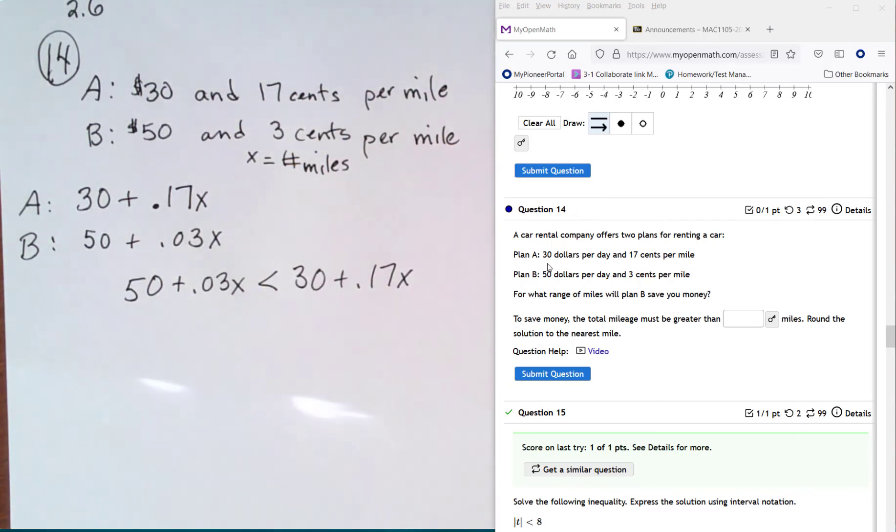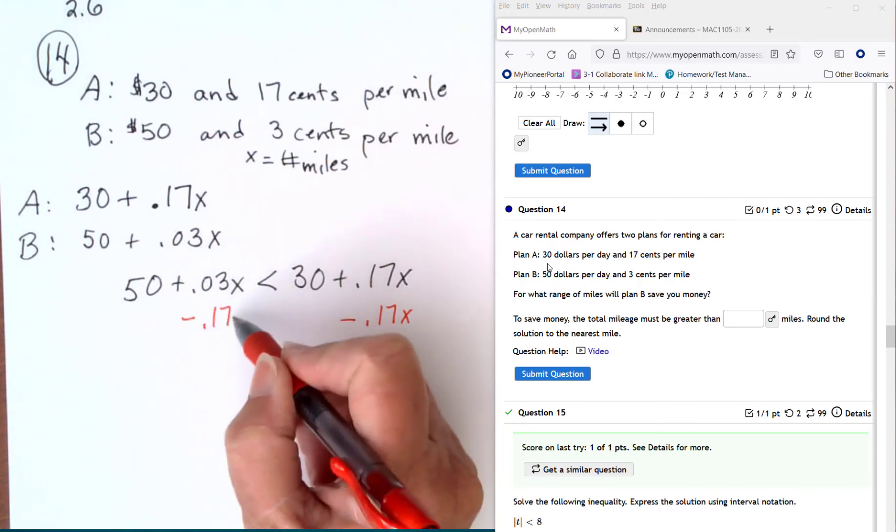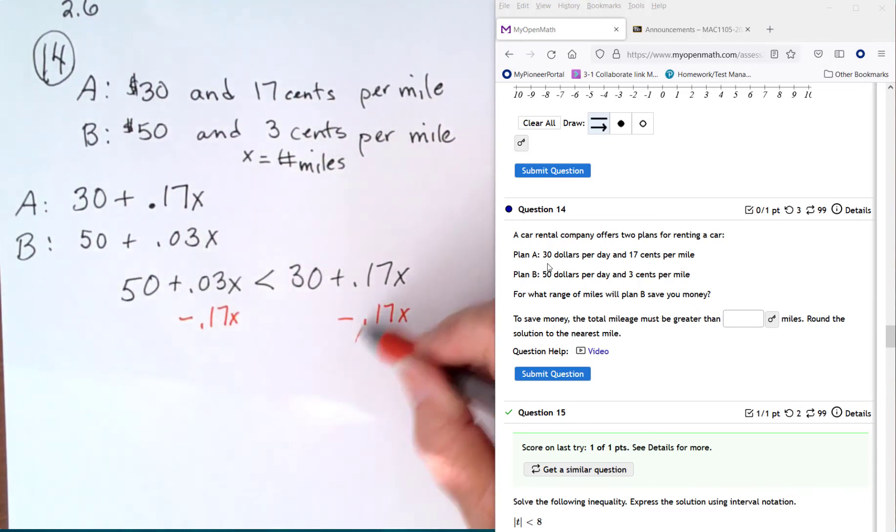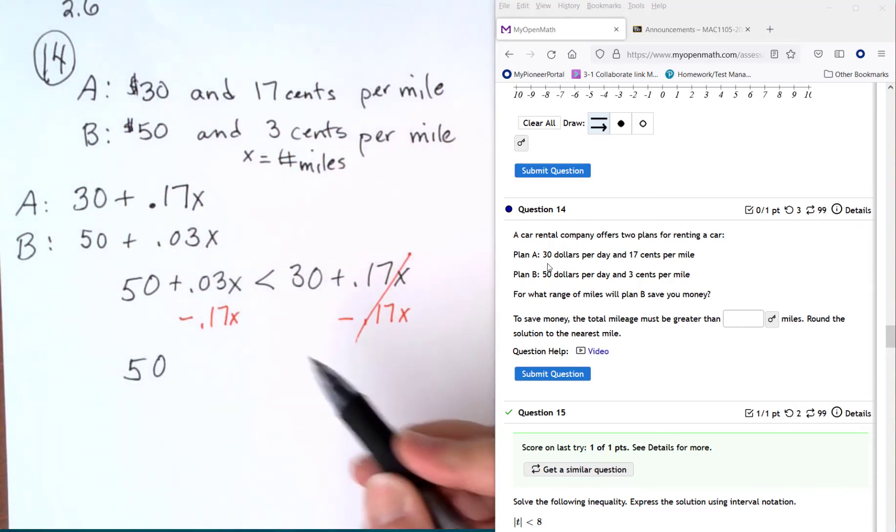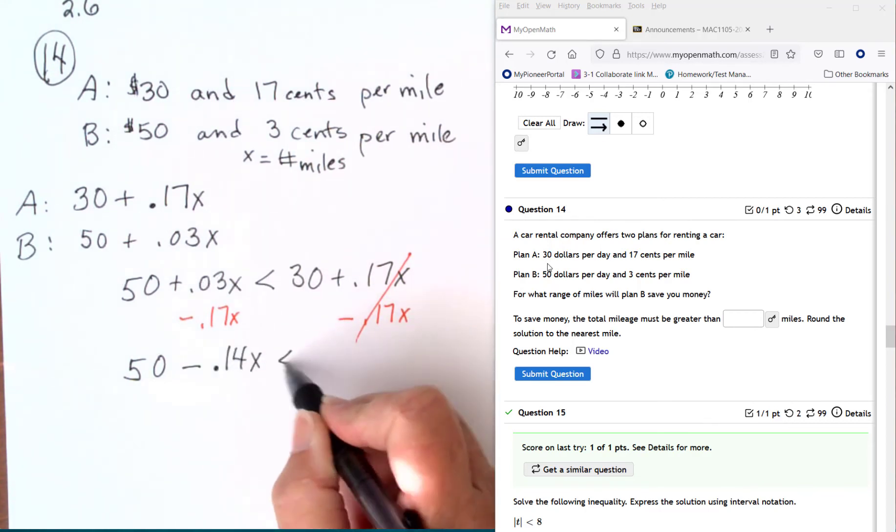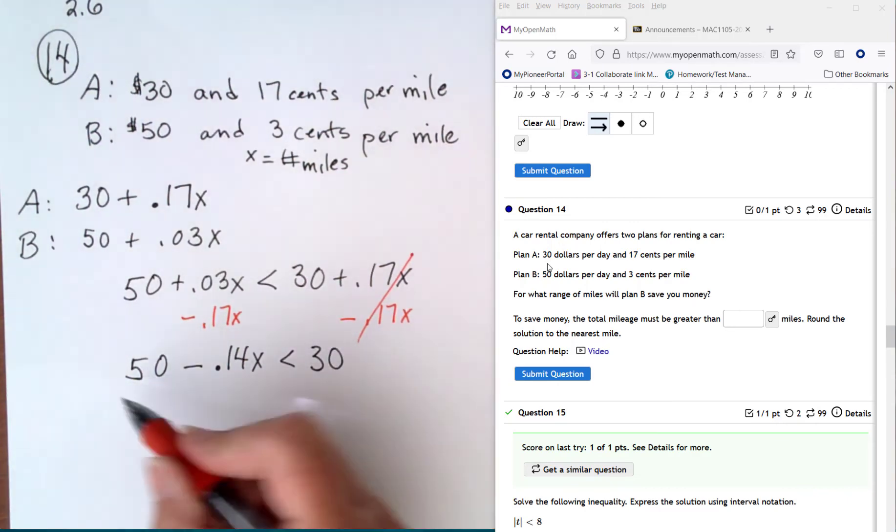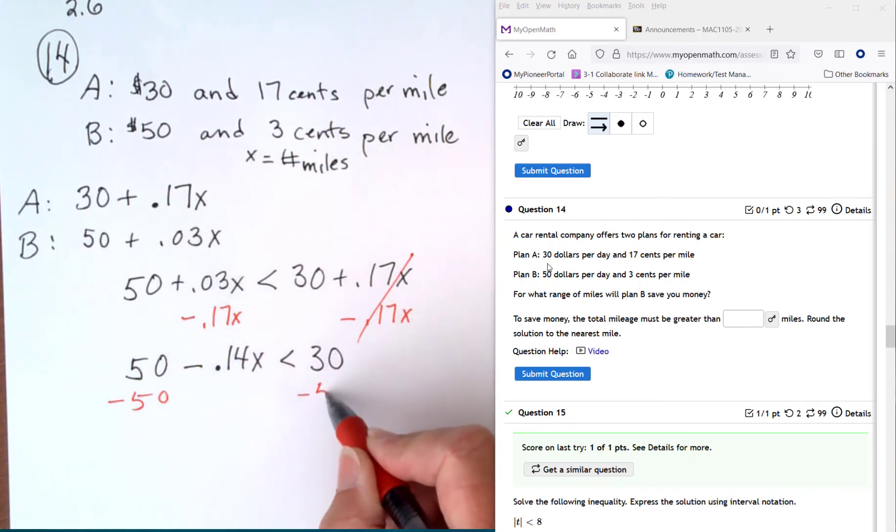Get rid of your x term. And I'm going to keep my x on the left. I like to do that with inequalities. So we'll get rid of the 0.17x. And so we'll have left 50. And this will be negative 0.14x is less than 30. Now get rid of your 50. And so we'll subtract a 50 from both sides. You have negative 0.14x is less than negative 20.